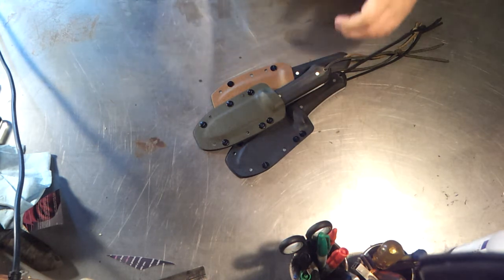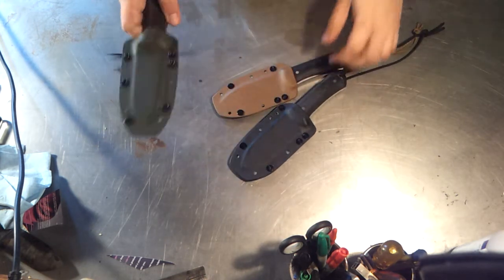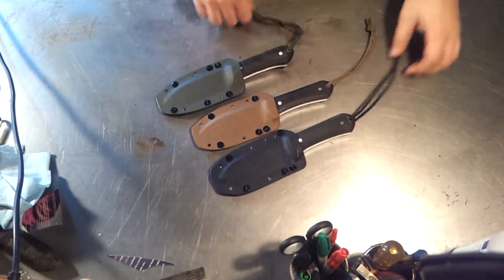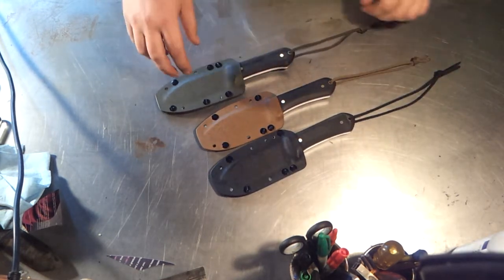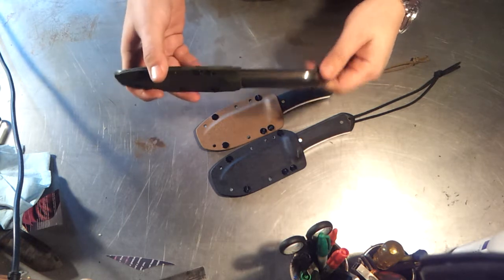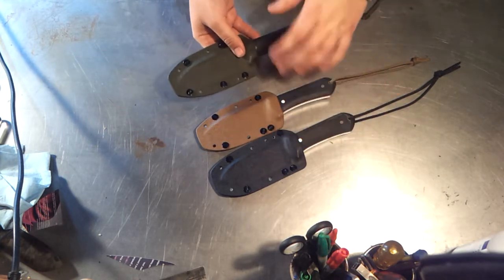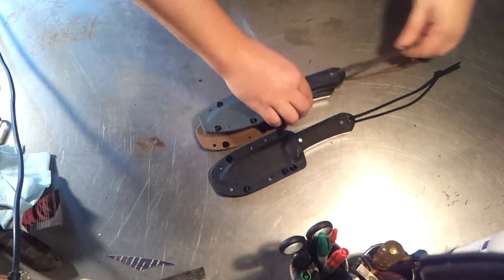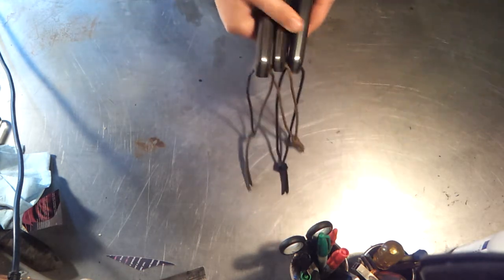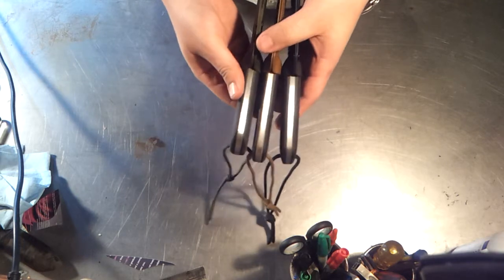Basically we have the three woodsman that I finished up yesterday. The first one has an OD green sheath with OD green G10 liners. First let me start by saying they're all essentially identical, except for - I mentioned in yesterday's video that the scales on the one in the middle here with the coyote are slightly slimmer.